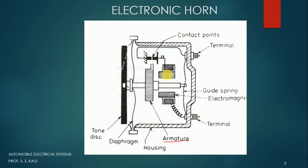The armature can move horizontally because here we have one contact point. From this contact point, the electric connection goes to these particular coils. These coils are called field coils, and here we have the electromagnet. When we supply electricity, this will act as a magnet. When we don't supply electricity, it will not act as a magnet. There are two terminals to which we have to supply electricity. The electricity supplied to the terminal goes to the field coils and another connection comes to the contact breaker point, which is operated by the armature. These are the basic components of the electric horn.